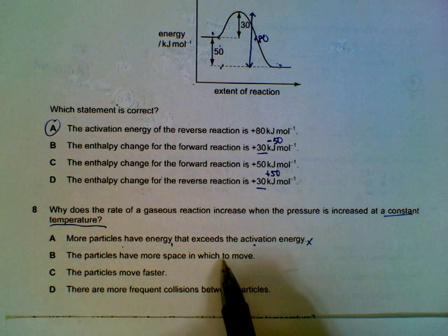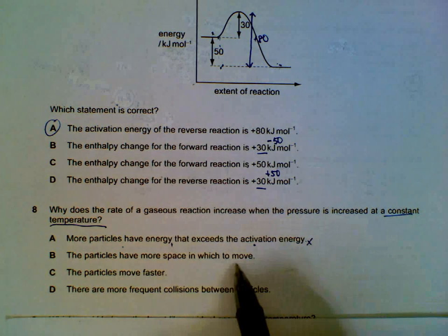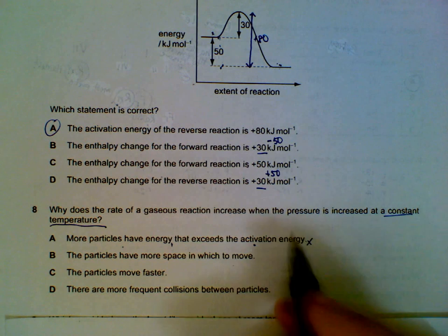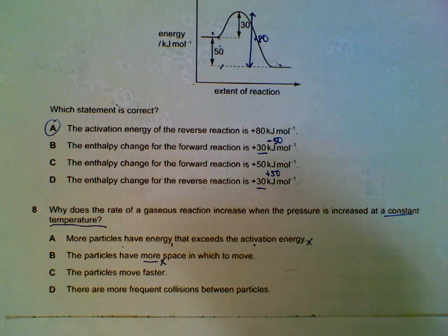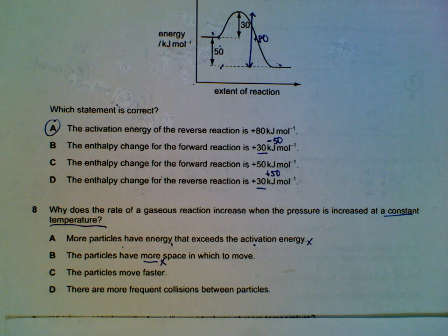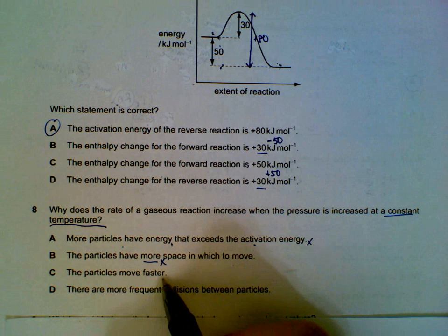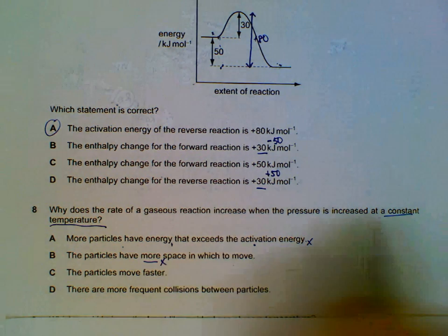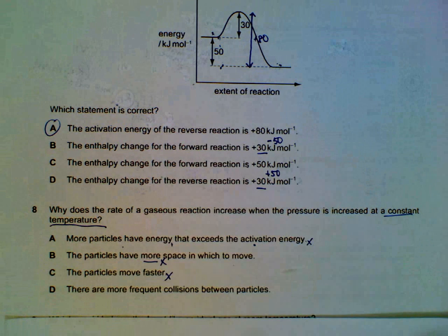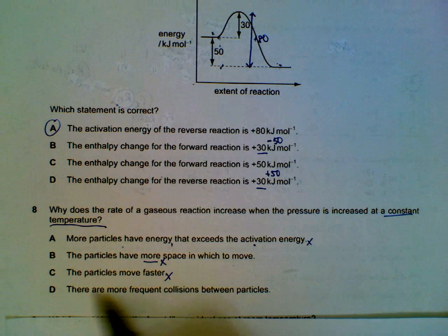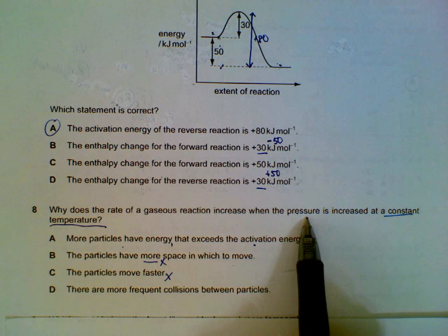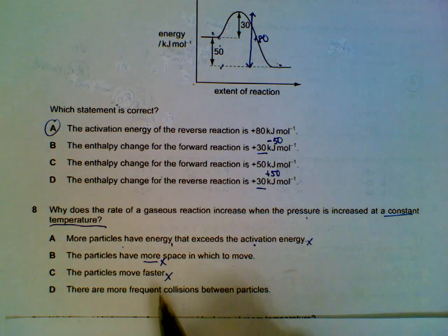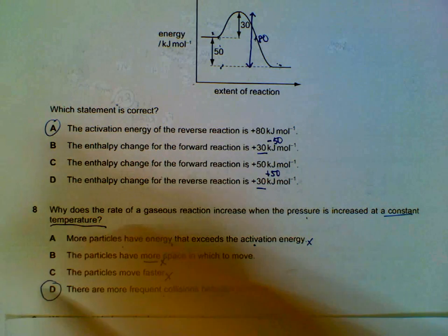Option C says particles have more space to move — wrong, increasing pressure means particles have less space and are more crowded. Option saying particles move faster is also wrong — that depends on temperature, which hasn't changed. What is true is that squeezing particles together by increasing pressure means they are closer to one another and collide more frequently. So option D is correct.